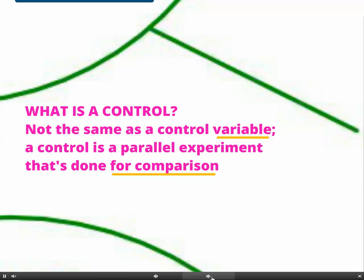So what do we mean by a control or a control group? This doesn't mean the same as a control variable. A control variable is one of the variables that might affect your experiment, so you have to keep it the same. But an experimental control is different — it's a parallel experiment that you run for comparison, so you have something to compare your experimental group with. Comparison is the key word to get into your answer of what is a control.